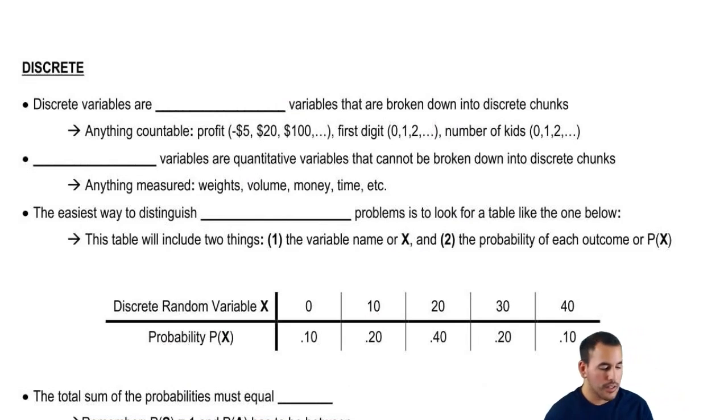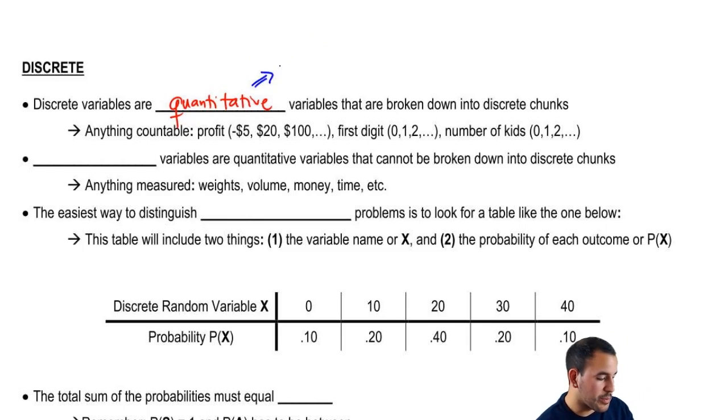So discrete variables are quantitative variables, and remember from back in the day, quantitative was just basically numerical data, right? It's quantitative data that's broken down into discrete chunks, and essentially it's anything countable. Those are usually the easiest way for you to tell something is discrete. For example, profits - let's say you're playing the lotto, there's only so many profits that you can make. You either lose a dollar or you win the jackpot. First digits, so for example the first digit of any cell phone number, that's going to be 0, 1, 2, 3. It's not going to be 1.2, it's not going to be 2.7. Another one, number of kids. You can't pop out 2.2 kids. So these are any numbers that can be countable.